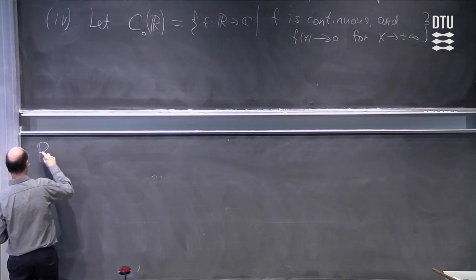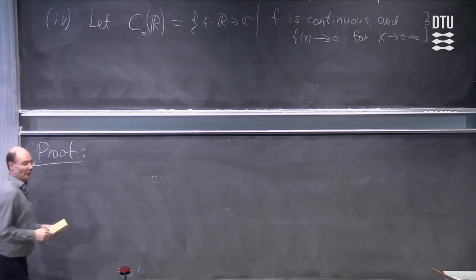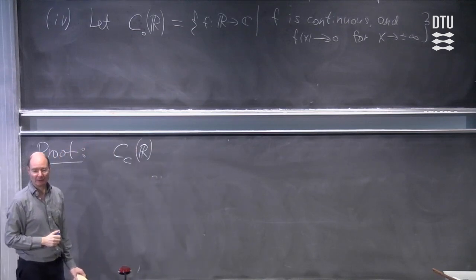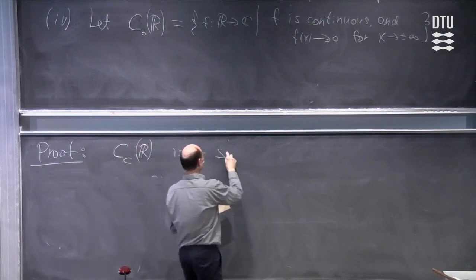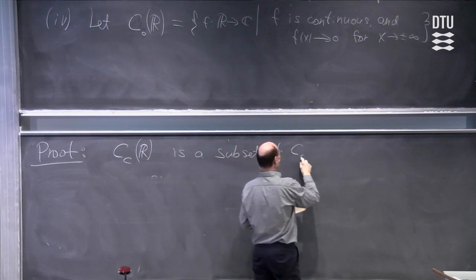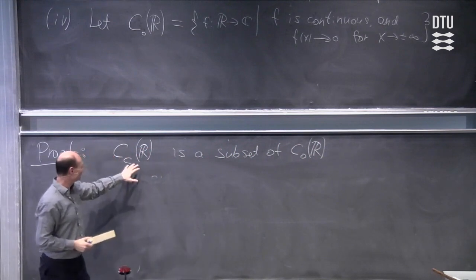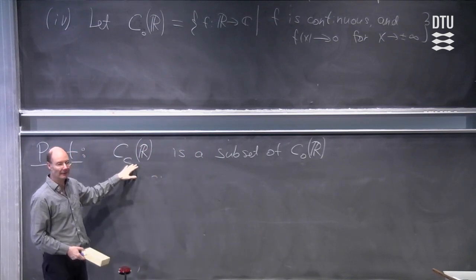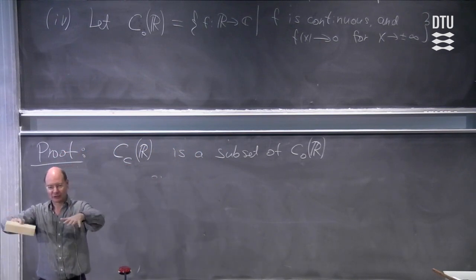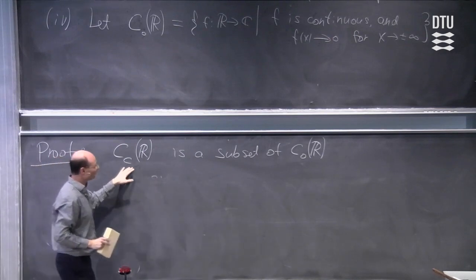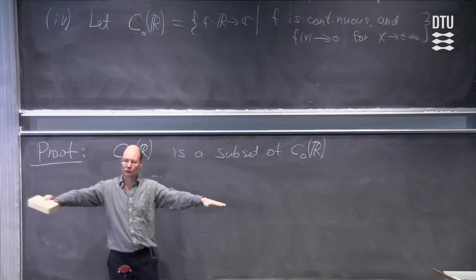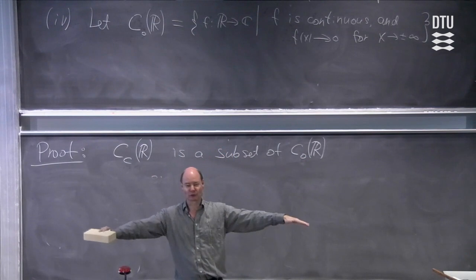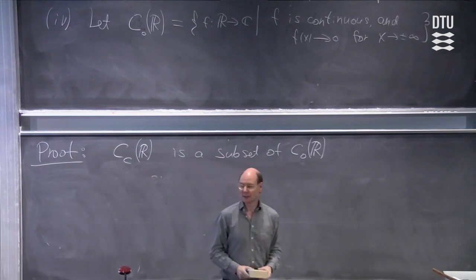Let's see how we can prove this. First, I claim that Cc(ℝ) is at least a subset of C₀(ℝ). If you take any function in Cc(ℝ), it has compact support — meaning the function does something and then is equal to zero outside a bounded set. If this is satisfied, then the function converges to zero as x goes to plus or minus infinity, so it also belongs to C₀(ℝ), since C₀(ℝ) just means the function converges to zero. This is also a Banach space with respect to exactly the same infinity norm.